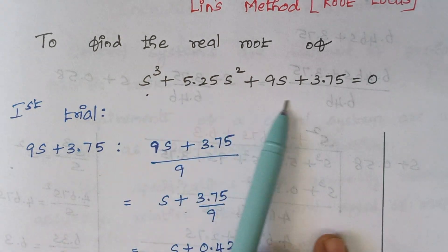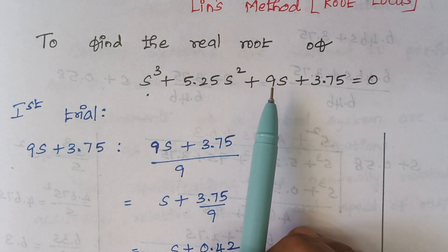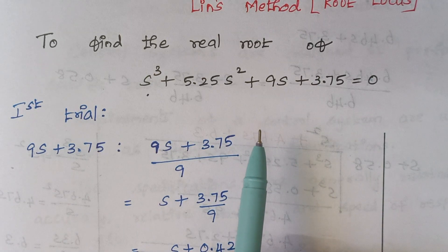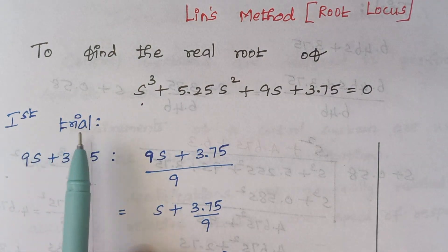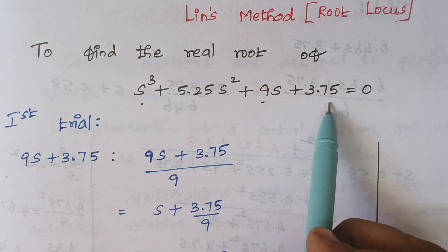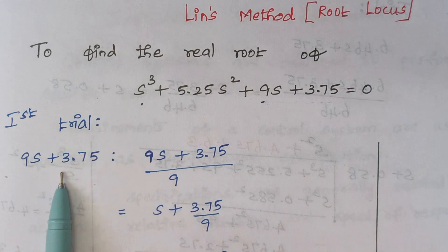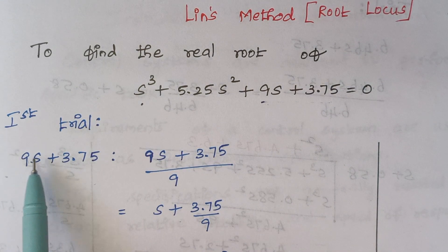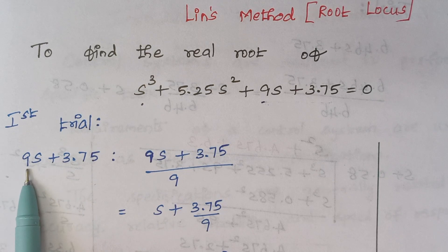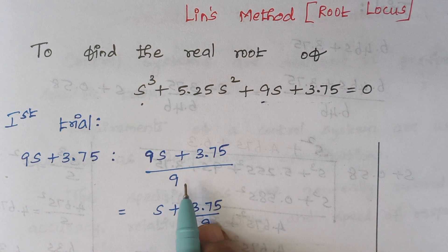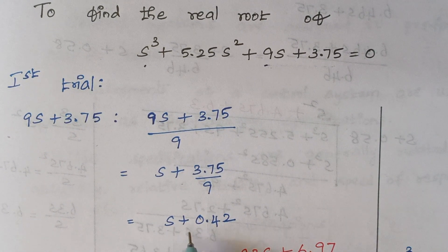So here we will start. This is our cubic equation and finally we will be having three roots. In Lintz method, we are going to find one root among the three roots. We are starting with the different trials. In the first trial, just take the last two values — that is 9s plus 3.75. We are having a number along with s, so we have to divide this entire expression by that number, which is 9. By solving, we are getting an expression like this: s plus 0.42.